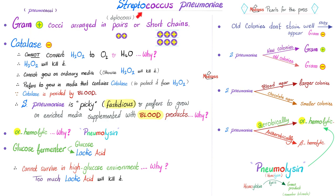What's the name of the medium that will provide catalase? Blood and blood products. Streptococcus is picky — fastidious. It prefers to grow on enriched mediums supplemented with blood products, to give you some robust, large colonies.